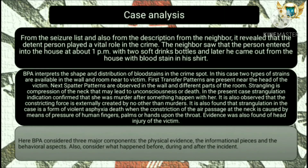It was found that strangulation in this case was a form of violent asphyxia, where constriction of the air passage at the neck was caused by pressure of human fingers, palms, or hands upon the throat. Evidence was also found relating to head injury of the victim. Blood pattern analysis considered three major components: the physical evidence, informational pieces, and behavioral aspects — also considering what happened before, during, and after the incident.